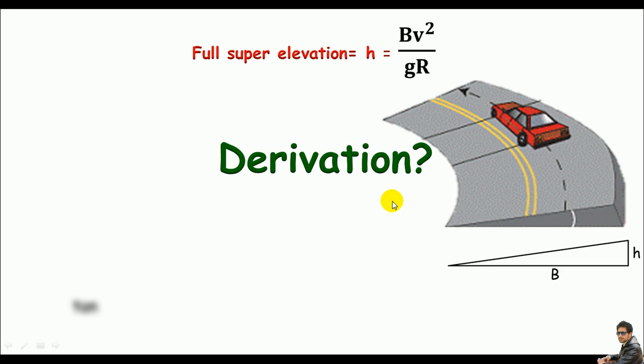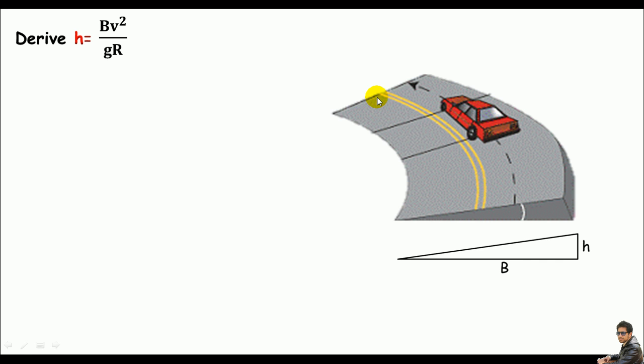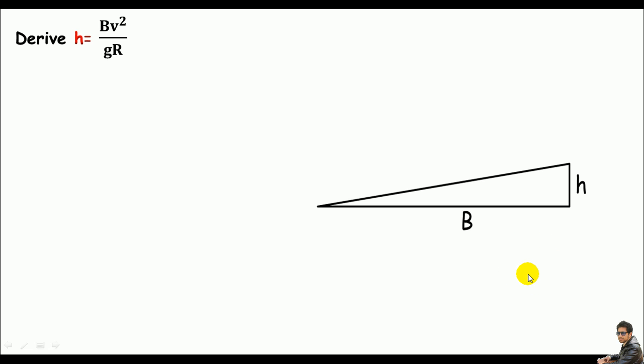Say we are asked to derive Bv² divided by gR, which is super elevation. I'll assume a road in a curved form, and let me take the section only - this triangular section.